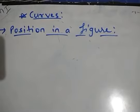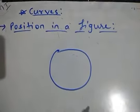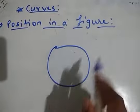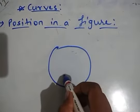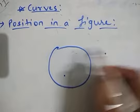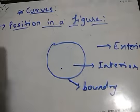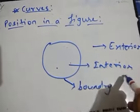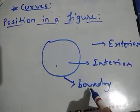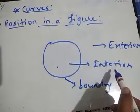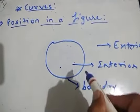One more thing to remember: one closed figure drawn in a plane surface divides the whole plane into three parts. One is the interior part, another one is the exterior part, and the third one is the boundary itself. So whatever is inside is the interior, outside is the exterior, and the boundary itself. One closed figure divides a plane into three parts.